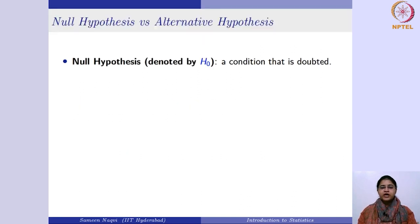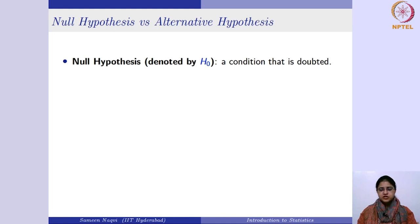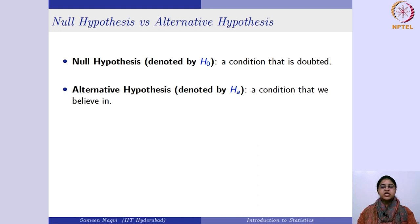Two common terms in hypothesis testing are the null hypothesis and the alternative hypothesis. The null hypothesis, denoted H₀, is always the statement in which you have doubt — it is a statement of no effect or no difference. The alternative hypothesis is the condition you believe in. Whatever you doubt goes into the null; whatever you believe goes into the alternative.